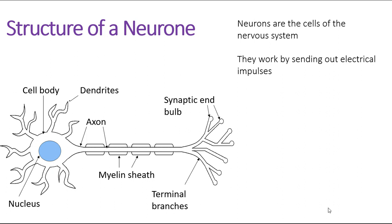The axon transports the electrical impulse from the dendrites down through the axon, which will finally reach these other branch-like structures known as the axon terminals. This is where the electrical impulse will exit the neuron and make its way to the next neuron within the circuit.